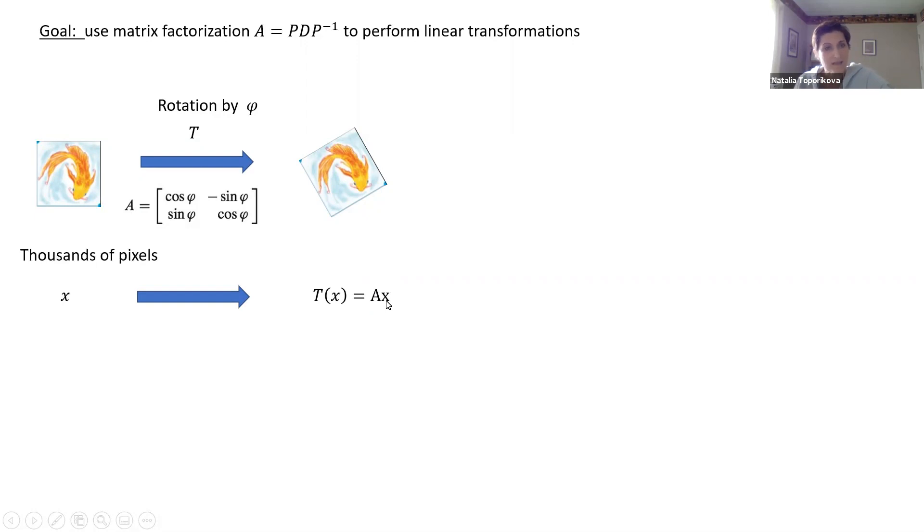However, there is a slight problem here. We have usually thousands of pixels in every given image, and every single pixel we have to multiply by this matrix. And that will be a really slow operation. Because even though the matrix has only four elements, doing it thousand times, when we multiply a matrix, we have to multiply row by column, add everything together, it adds up. This process will be very slow.